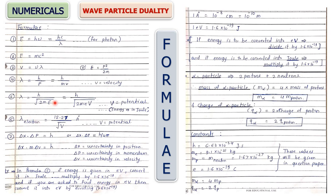Whenever we use any energy formula, energy must be in joules. If energy is given in electron volts, first convert to joules by multiplying by 1.6 × 10⁻¹⁹. Conversely, if you need to express energy in electron volts, divide the joule value by 1.6 × 10⁻¹⁹.